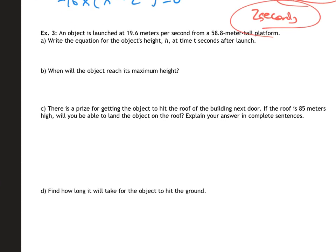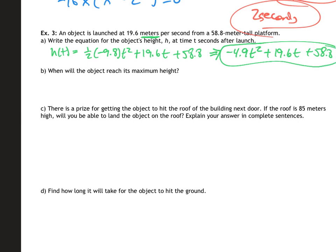Example three: an object is launched at 19.6 meters per second from a 58.8-meter tall platform — so this time we use the meters version. The equation is h(t) equals one-half times negative 9.8 times t squared plus 19.6t plus 58.8. Simplifying, that gives us negative 4.9t squared plus 19.6t plus 58.8, and that's the equation I'm going to be working with.